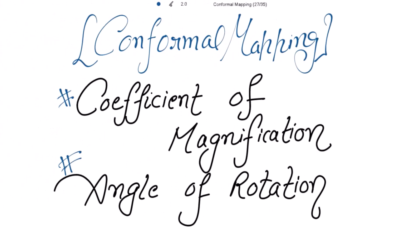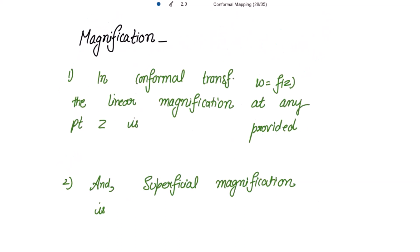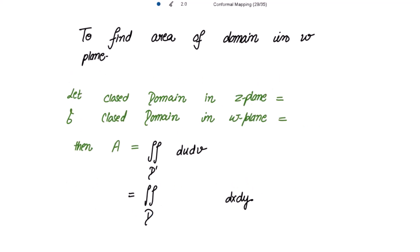We are going to learn how to find the coefficient of magnification and angle of rotation for conformal transformations. For the conformal transformation w = f(z), the linear magnification at any point z is |f'(z)|, provided f'(z) is non-zero, and the superficial magnification is |f'(z)|².